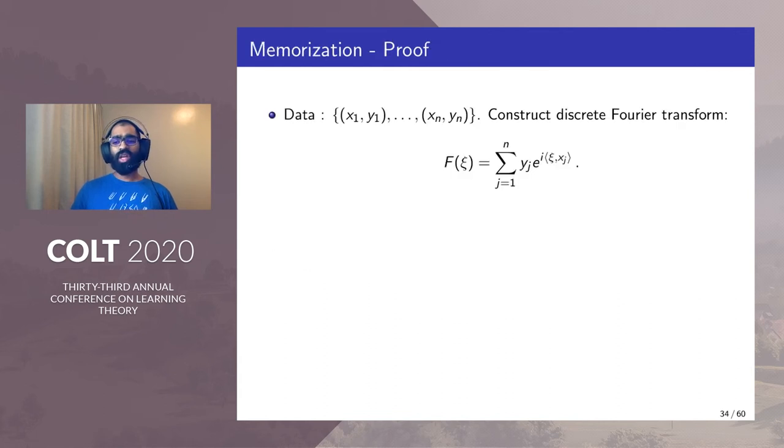We now describe in some detail the proof method for memorization which is the easiest by far. Suppose we are given data points x_1 to x_n and labels y_1 to y_n, we construct the following discrete Fourier transform.